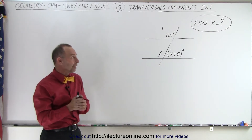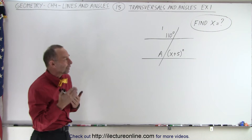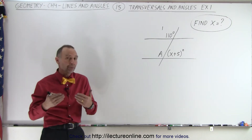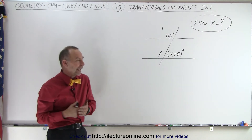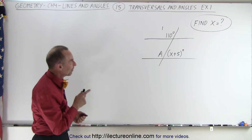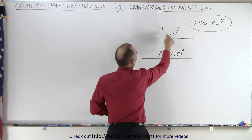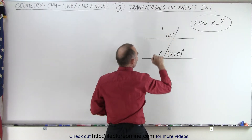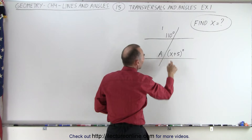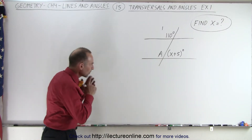Welcome to ElectronLine. Now that we understand how the angles relate to one another when we have a transversal crossing two parallel lines, let's try our hand at this particular example. Here we're trying to find the value for x. We're given that this angle right here, let's call it angle 1, has a measure of 110 degrees. This here is angle A, and we're trying to find the value for x.